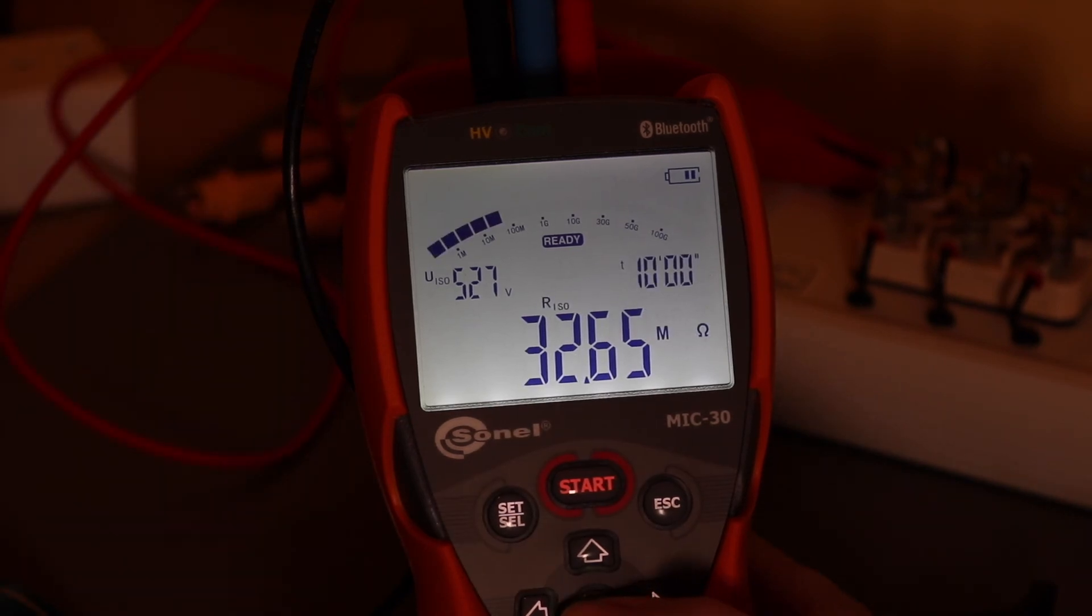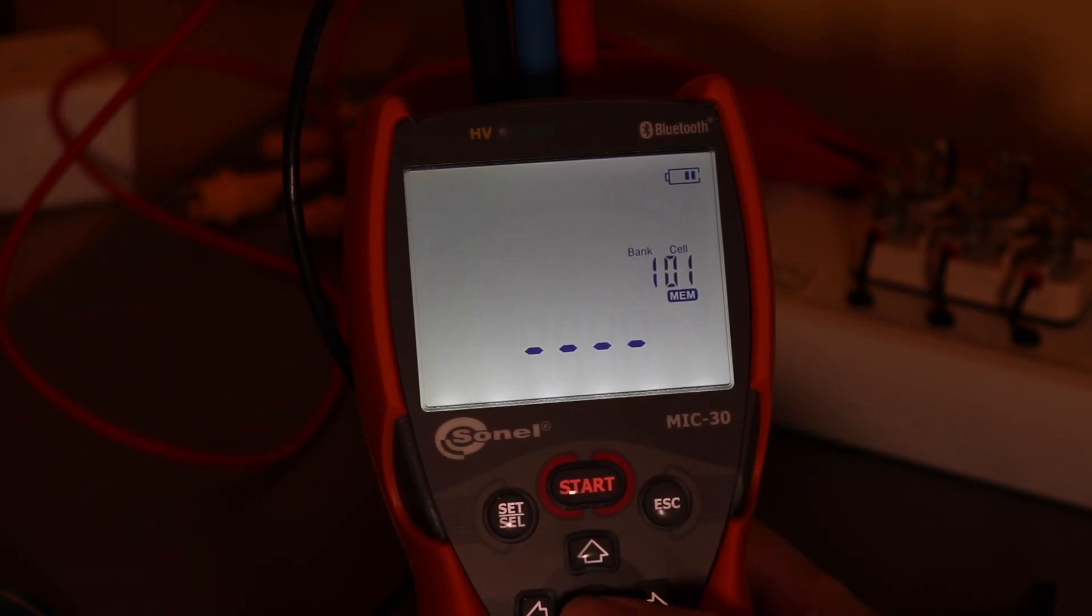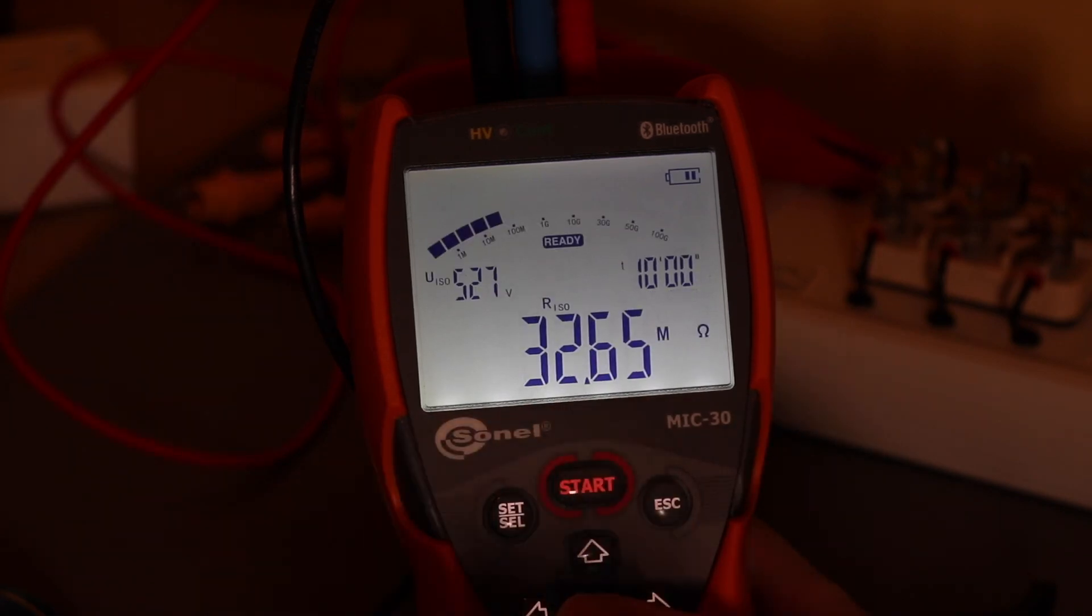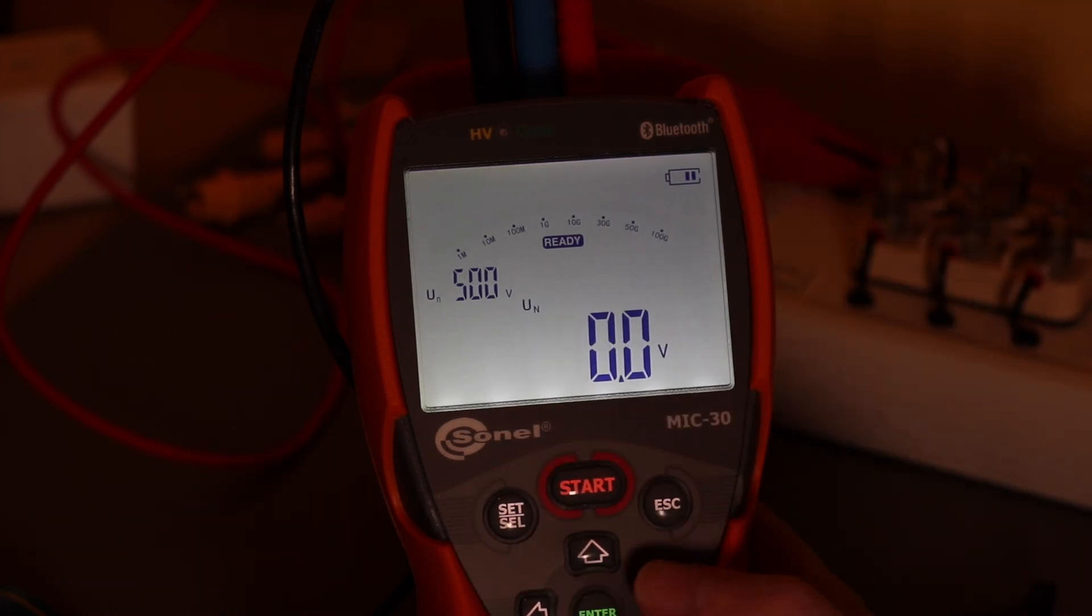And then to save all of those we'll hit the enter key. We can go back to the bank. If we want to change that or we've run out of number of cells but I've got nothing used in this memory. So just hit enter again. And it goes straight into that memory cell. And that is a polarisation index test completed using the Sonal MIC30.